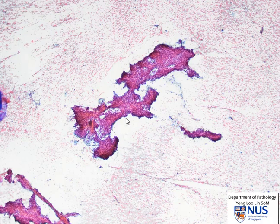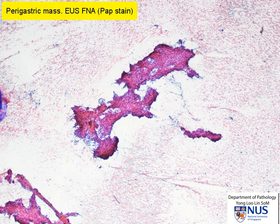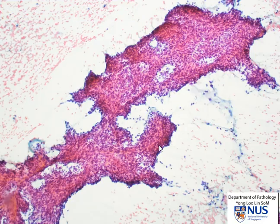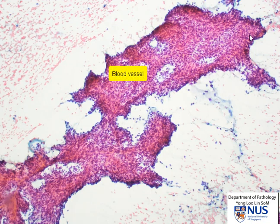Hello, this is a smear — an alcohol-fixed smear from an EUS-FNA sample from a perigastric mass. At low power, we can see that there are rather thick tissue fragments which are branching in nature. At this magnification, we can just appreciate that there are perhaps a couple of vessels running through, and these tissue fragments are quite cellular.